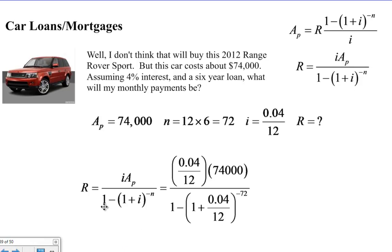When I plug all this information in, I get .04 divided by 12 times $74,000 over 1 minus 1 plus .04 divided by 12 to the negative 72. I highly insist that you put this into your calculator to check that you can do it. If you have an Inspire, it should look exactly like this. If you have an 84, you're going to have a lot more parentheses that you need to put in.